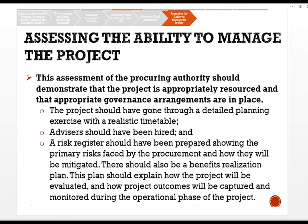The assessment of the procuring authority should demonstrate that the project is appropriately resourced and that appropriate governance arrangements are in place. The project should have gone through a detailed planning exercise with a realistic timetable. Advisors should have been hired, and a risk register should have been prepared showing the primary risks faced by the procurement and how they will be mitigated. There should also be a benefits realization plan explaining how the project will be evaluated and how project outcomes will be captured and monitored during the operational phase.